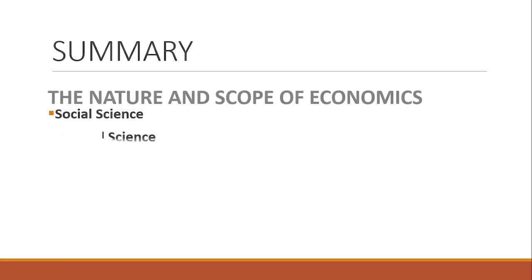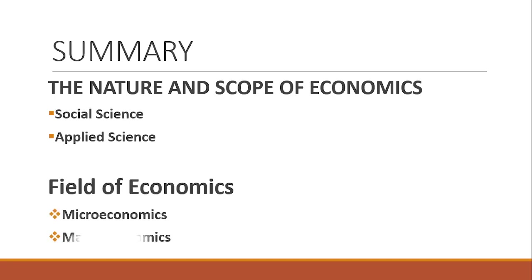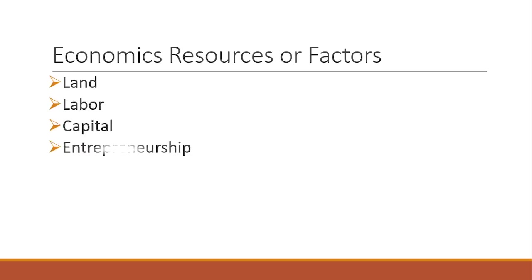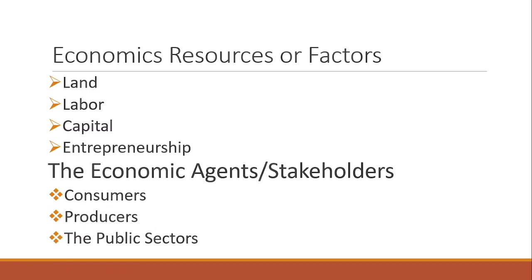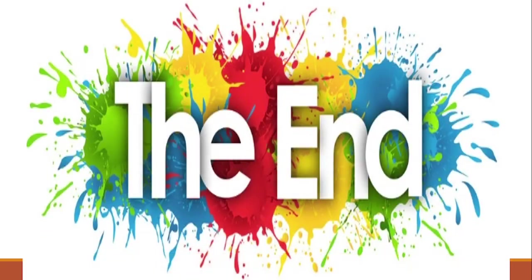Summary: The nature and scope of economics covers social science and applied science. The fields of economics are microeconomics and macroeconomics. Economic resources or factors are land, labor, capital, and entrepreneurship. Economic agents or stakeholders are consumers, producers, and the public sector. And that's the end of our lesson — thank you for listening, and God bless.